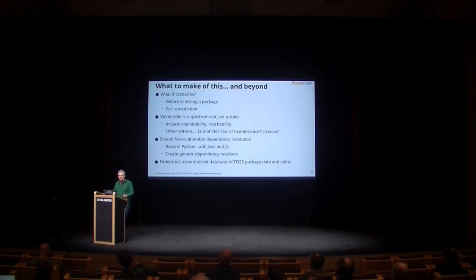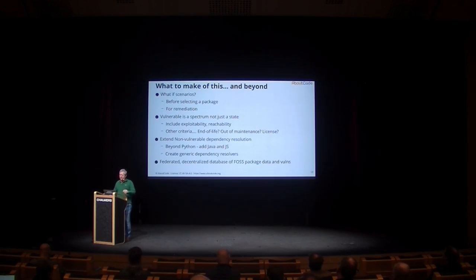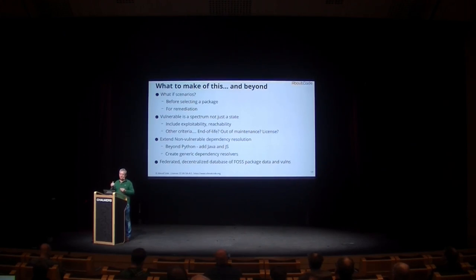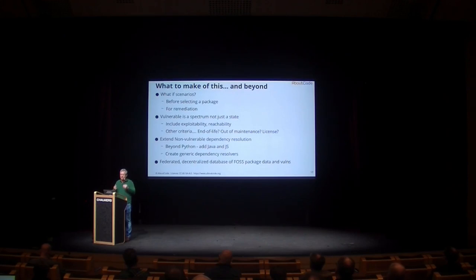So that's pretty much it. Beyond this, we're working to extend support beyond Python to add Java and JavaScript — those are the short-term goals — and after that to build a generic dependency resolver that's able to resolve dependencies irrespective of ecosystem. If you think about dependency resolution, you need a list of packages and their known versions. Once you have that in a normalized fashion with normalized version ranges and normalized identifiers, you can do dependency resolution in a way that's independent of the specifics of the ecosystem.